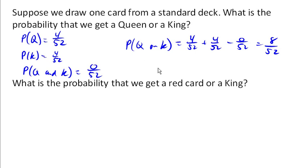It turns out that the probability of getting a queen or king is just the probabilities of the queen plus the probability of the king. Again, because they're mutually exclusive and there's no overlap.